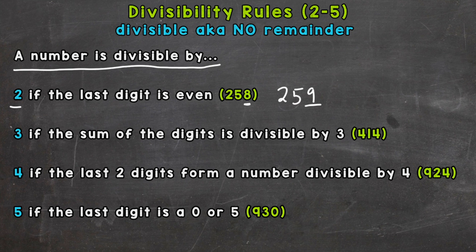A number is divisible by 3 if the sum of the digits is divisible by 3. So our example is 414. If we add up all the digits of that number and the result is divisible by 3, that whole number will be. So 4 plus 1 plus 4 — 4 plus 1 is 5, plus another 4 is 9. And 9 is divisible by 3; 9 divided by 3 is 3 without a remainder. So we automatically know that 414 is divisible by 3.